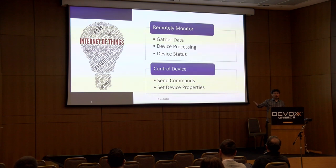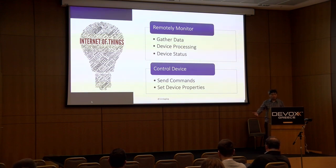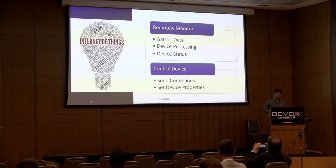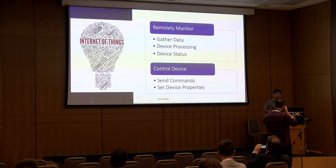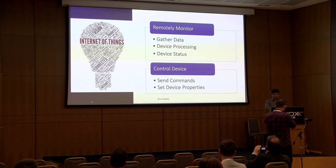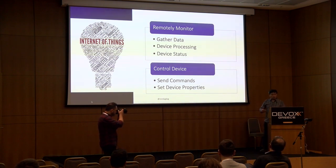There are two goals when building an IoT application. One is to remotely monitor a device — gathering data, processing it, and knowing the status of what's going on. The other is to control that device — turning it on and off, sending commands like 'Hey Google, turn off this device,' and being able to set device properties. Those are the two main goals.